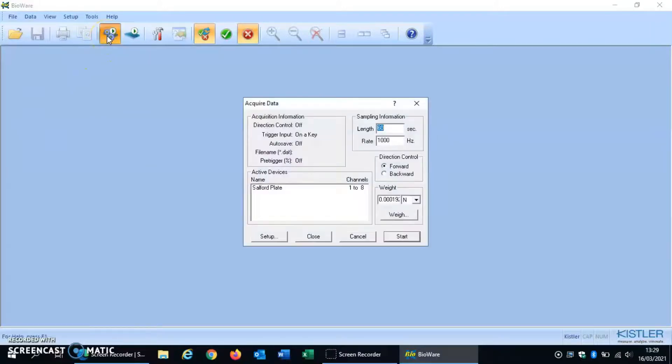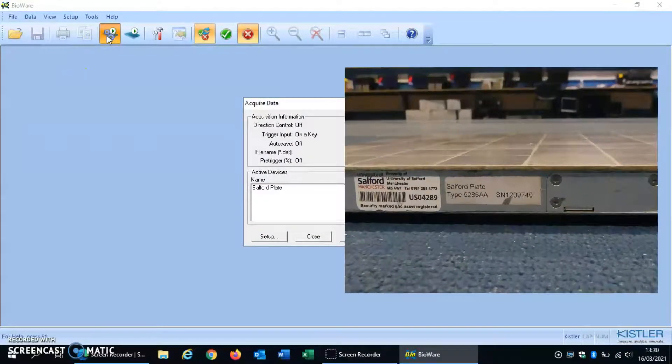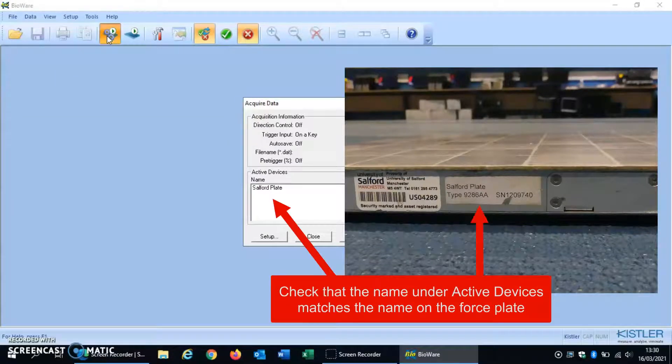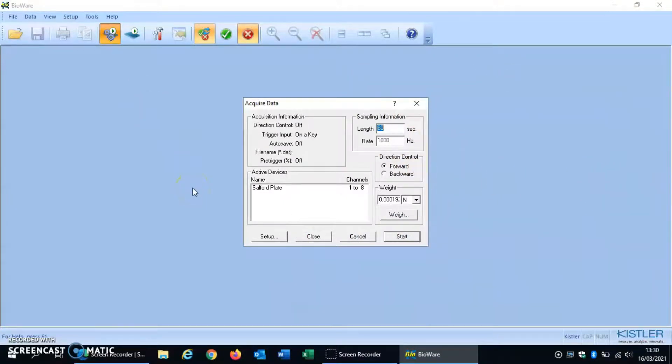Next select acquire trial. You can see under active devices there's the name software plate and we have two plates with different names so make sure that the active device name like here software plate is the same as you can see on the label on the force plate itself. Again if they're not please speak to a member of staff to help you.